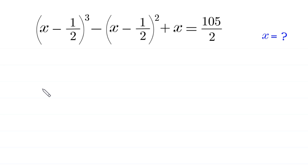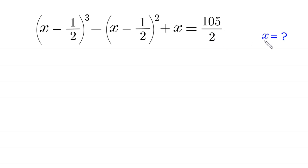Hello, welcome to how to solve this very nice algebra equation. The equation is: (x minus 1/2) cubed minus (x minus 1/2) squared plus x is equal to 105 over 2. We need to find all possible values of x.